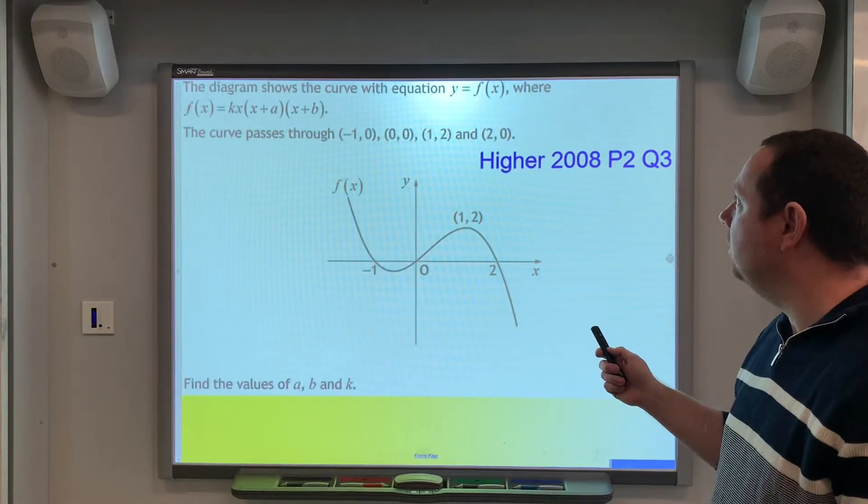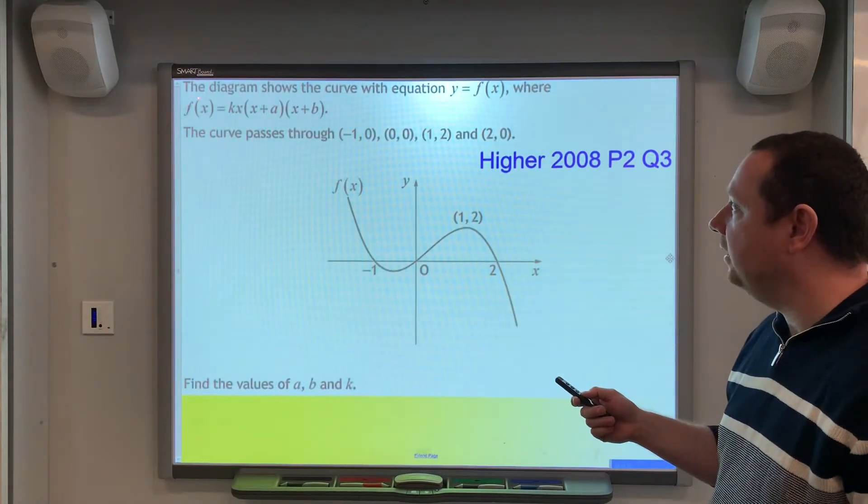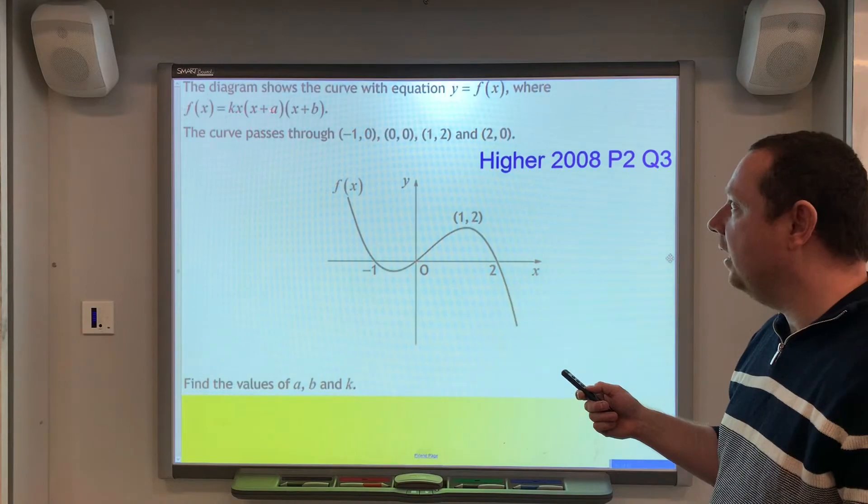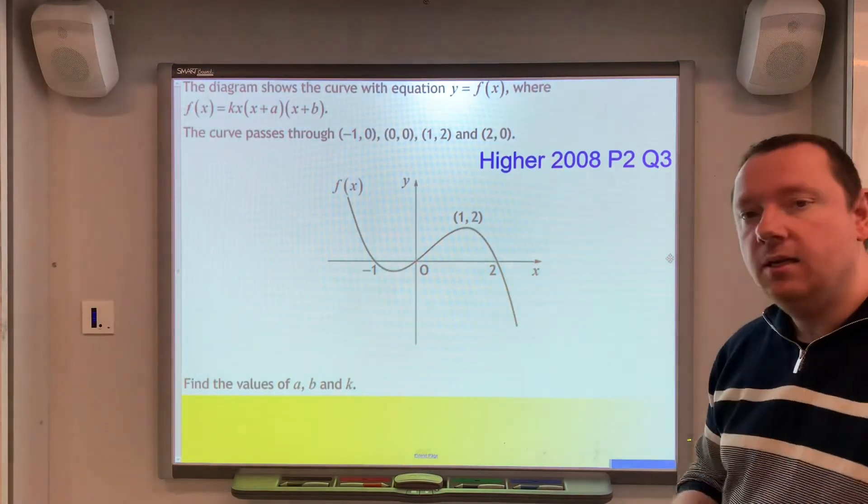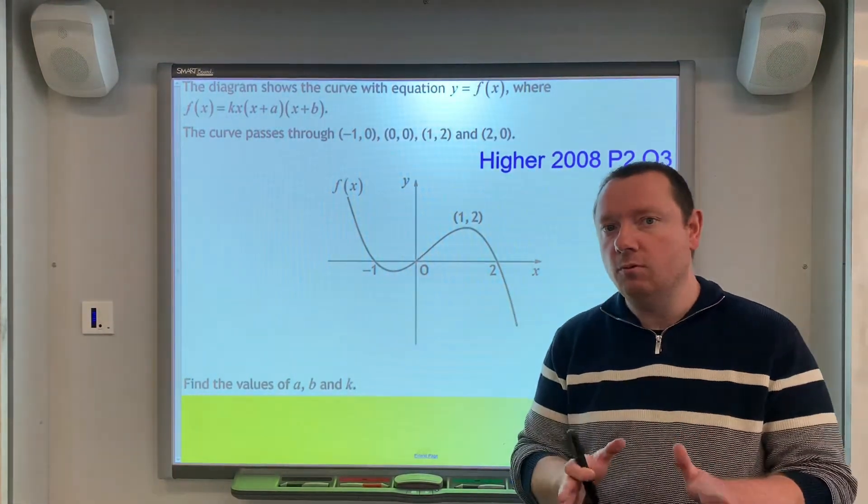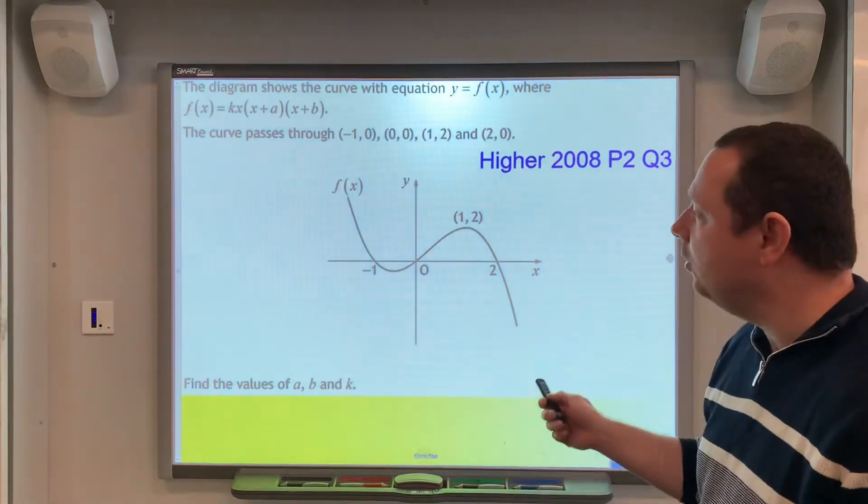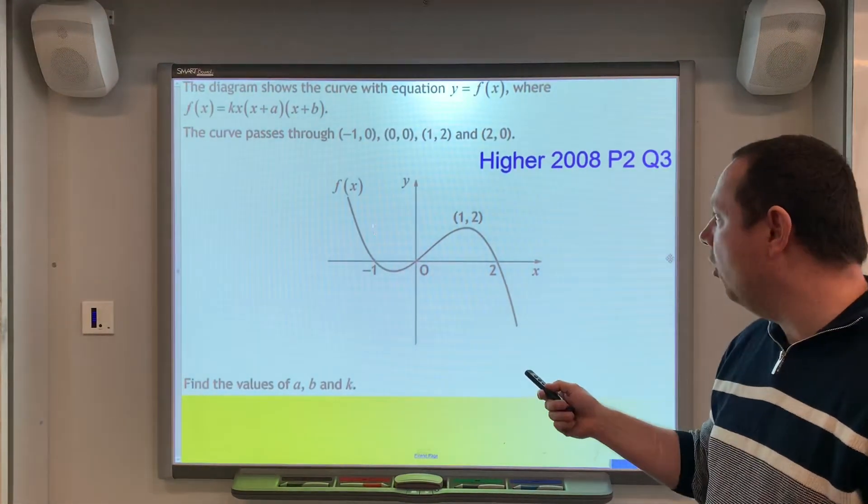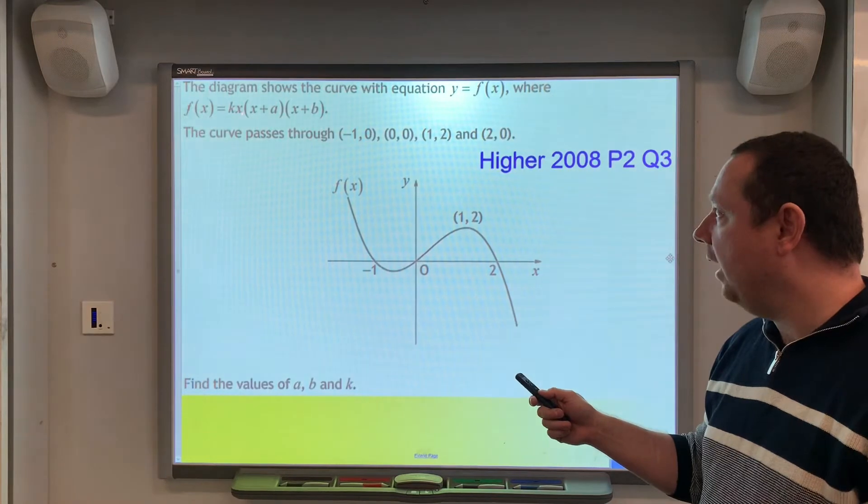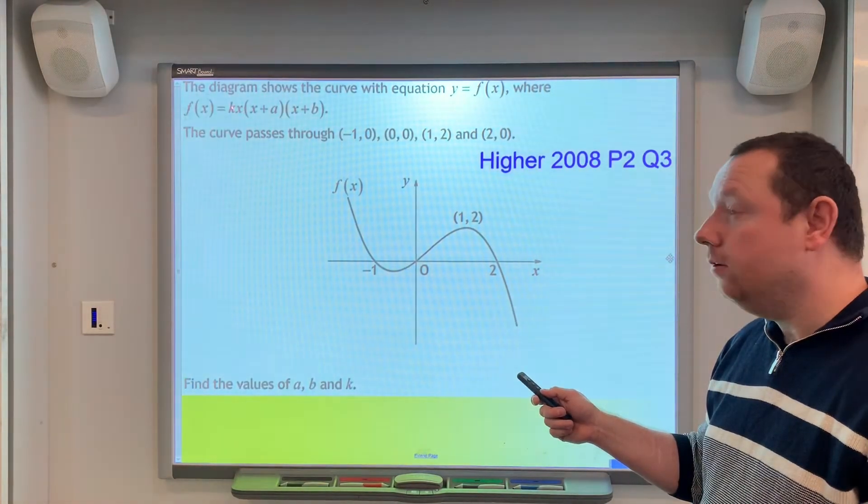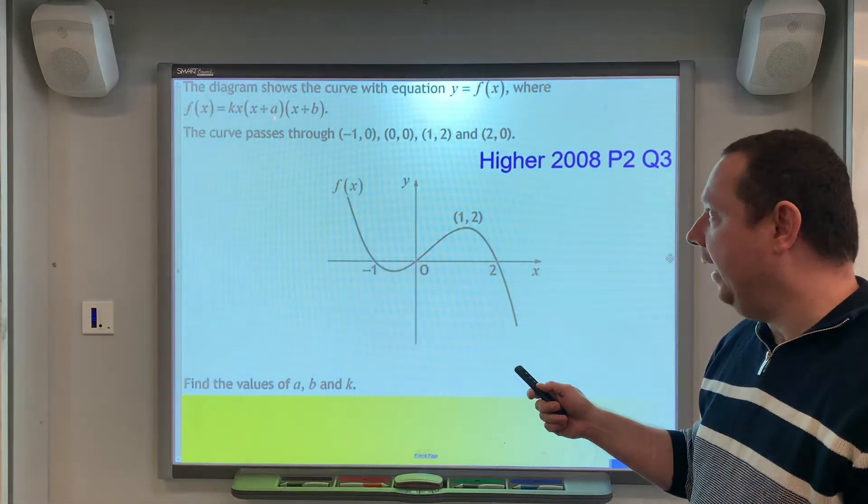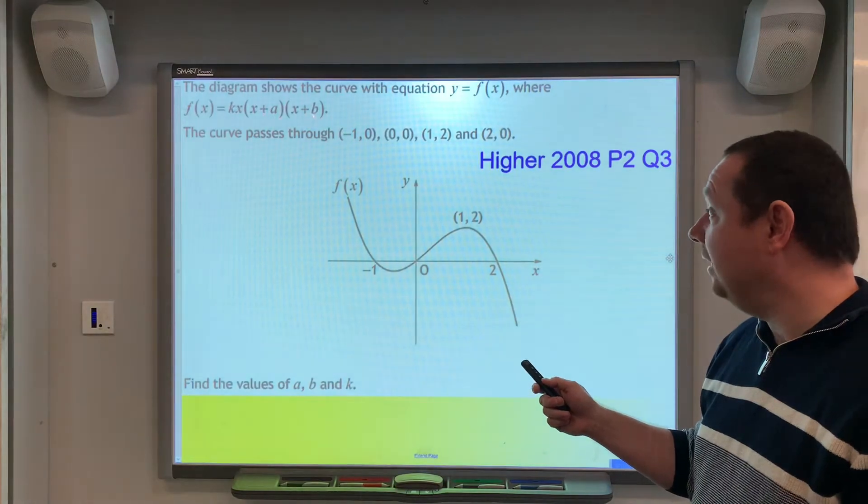So, the diagram shows the curve of the equation, y equals f of x, where f of x is k, x, x add a, x add b. Looks a little bit different from the one we've just done, but it's exactly the same. So, what I'm just telling you here is, we've got a cubic, and we've got 3 roots, x plus nothing, a and b, or minus a and minus b.